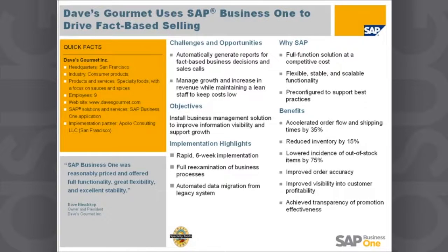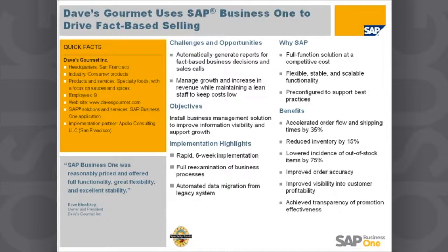They chose SAP because we had a full-function solution — flexible, stable, and competitively priced. The benefits they achieved include accelerating order flow and shipping times by 35 percent, reducing inventory by 15 percent, and lowering their incidence of out-of-stocks by 75 percent. Those numbers translate to higher sales and better profitability.